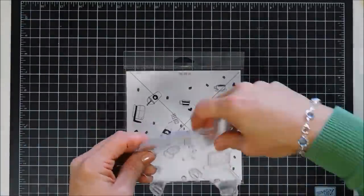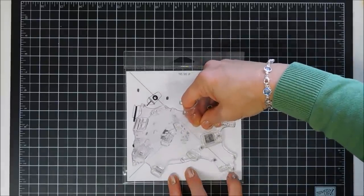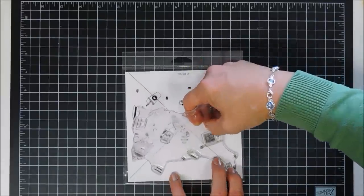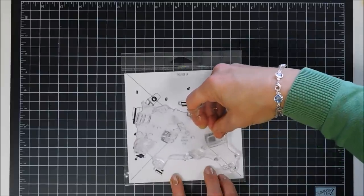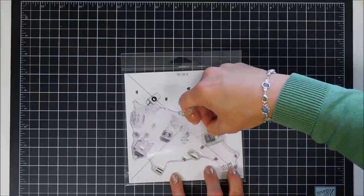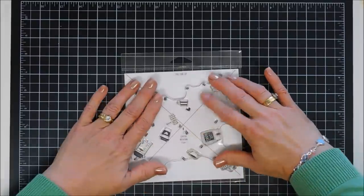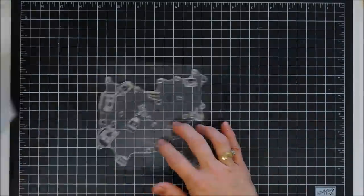I'm flipping my stamp set over so the side that you're going to stamp is going to be sticking down on the acetate. I'm just making sure everything's lined up. It does have that X on there too which makes it handy. So that's ready to go.